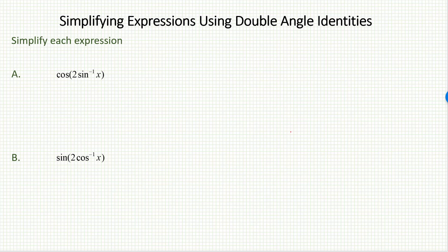Make sure you are clearly seeing what we have here. Sine inverse x, we've read this many times as the angle whose sine ratio is x. That's an angle, which means this expression here is cosine of double angle. It's cosine of 2 times as much as theta.